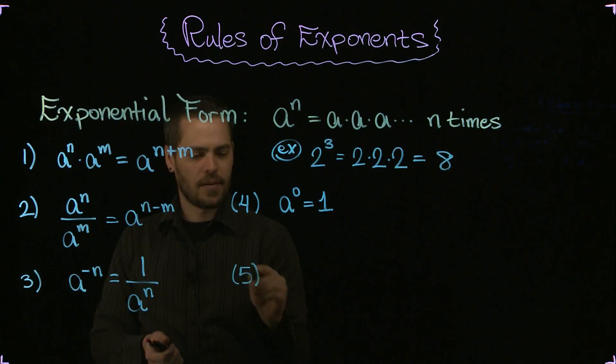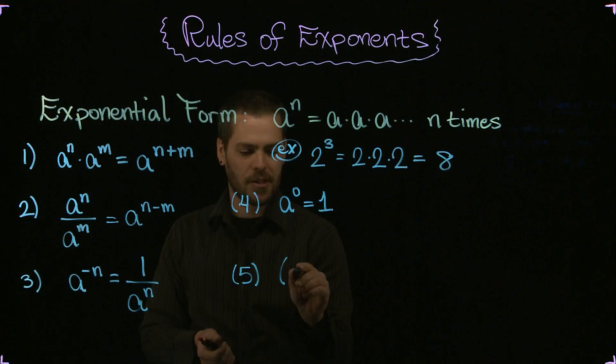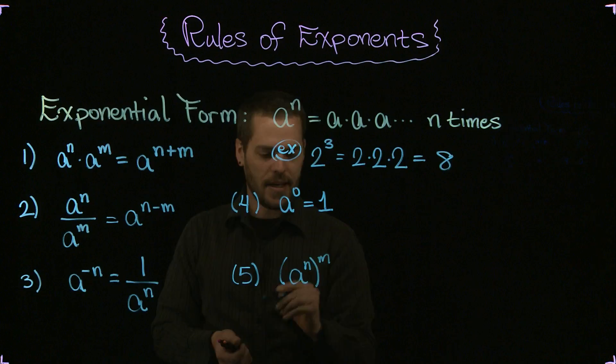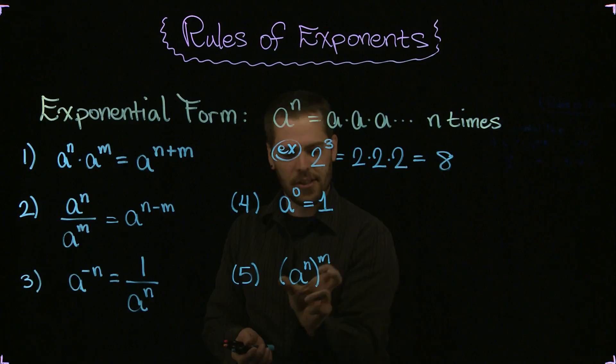Rule number five. Suppose we had, in parentheses, an exponential expression like a to the n, and that is raised to the power m. In this case, what this is telling you, if you take a look at the definition, is that you're multiplying a to the n, m number of times.